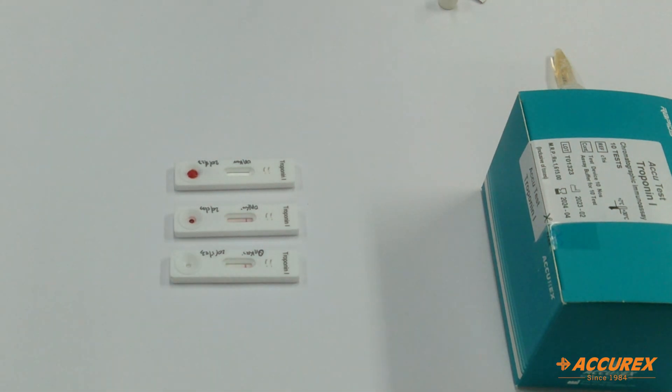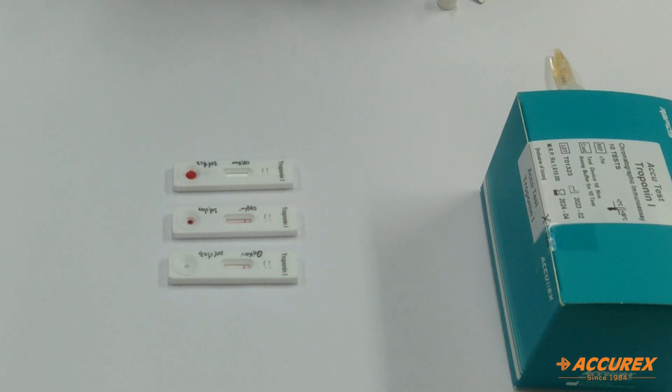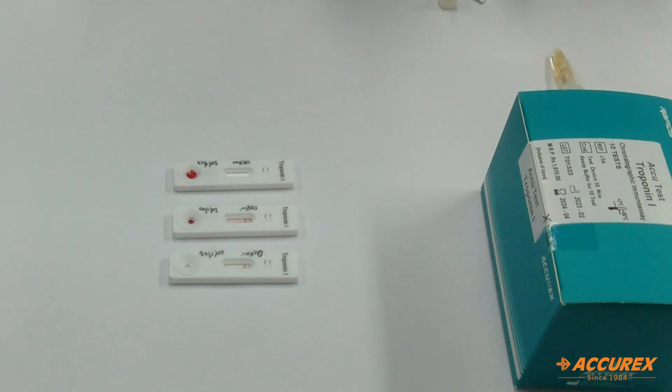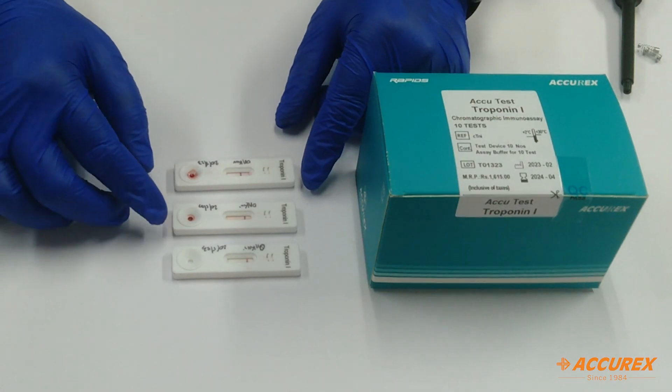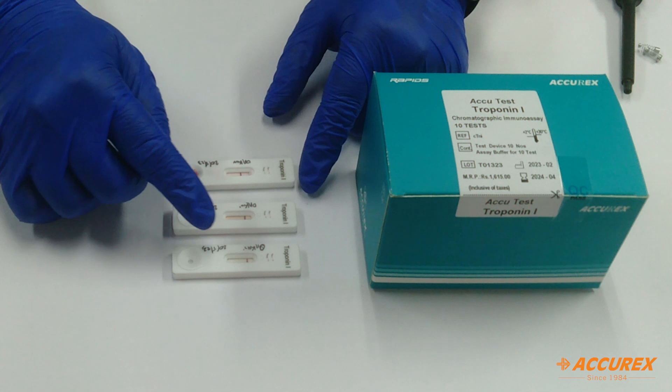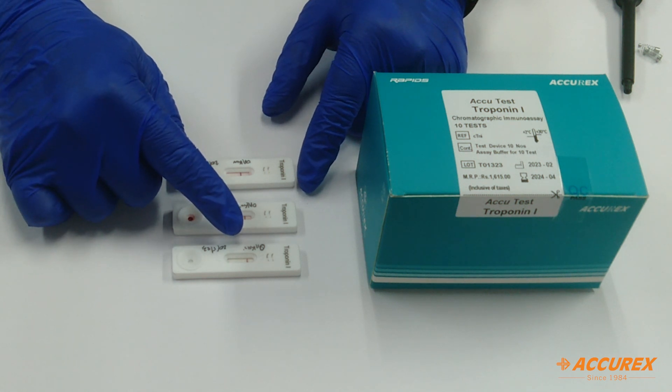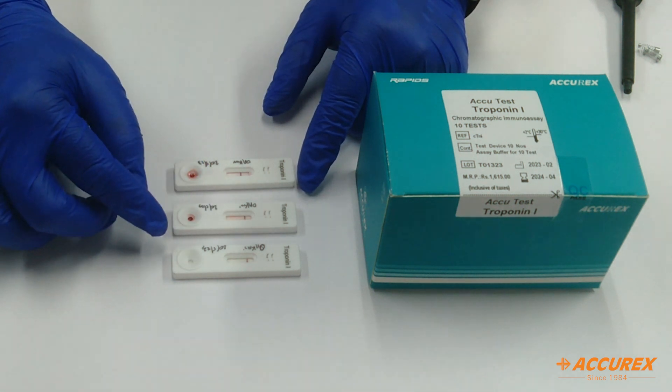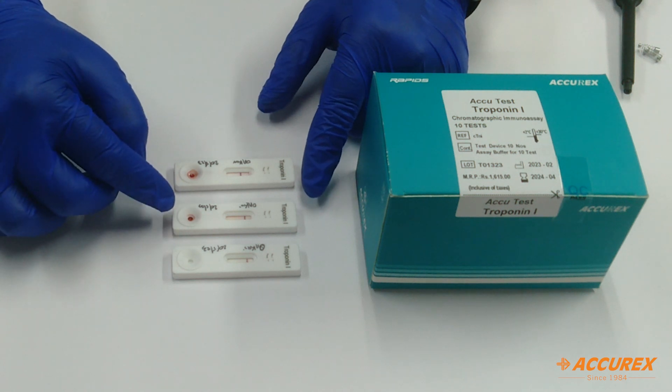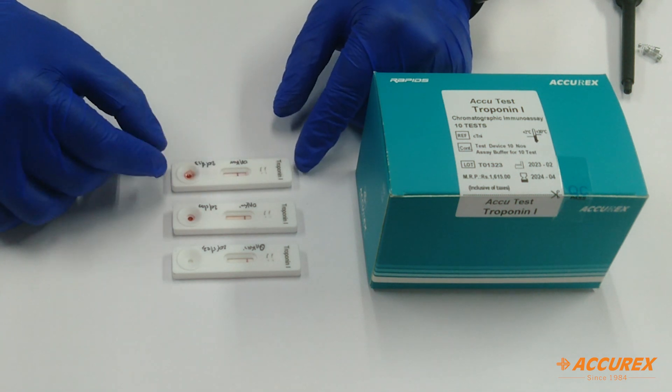We will wait for 10 minutes for the result. The 10 minutes has been completed. You can see one line has appeared near the control line, so it means the test is negative. In whole blood also it has been showing one line, so it means all the tests are negative.